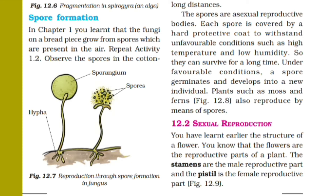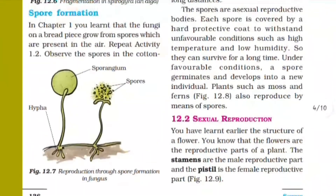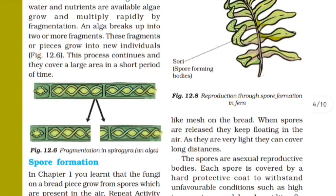Repeat activity 1.2 and observe the spores in the cotton. There was an activity we studied — activity 1.2 in chapter 1 — and you need to go through that activity once again. We observe the cotton-like mess on the bread, and we observe the spores that are present as a mess on bread.